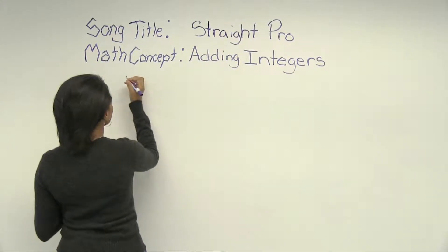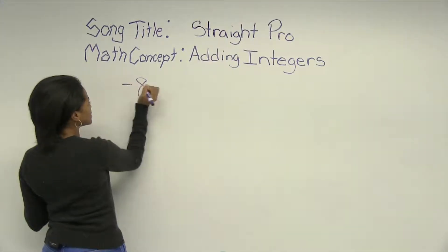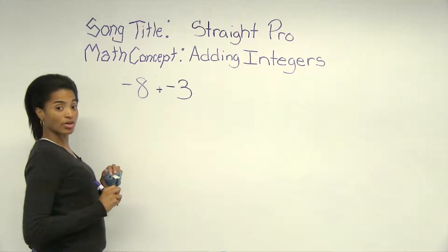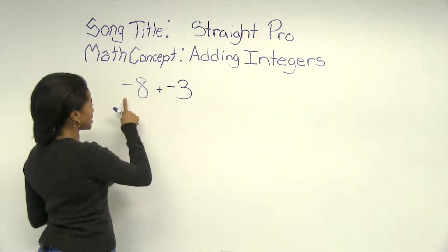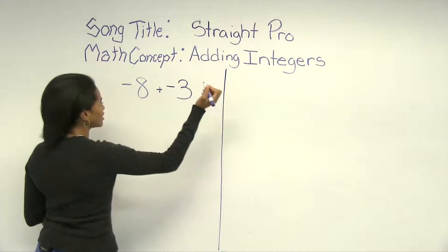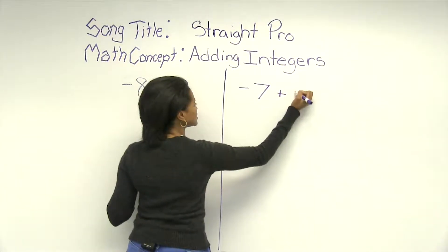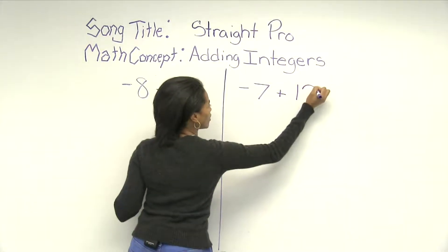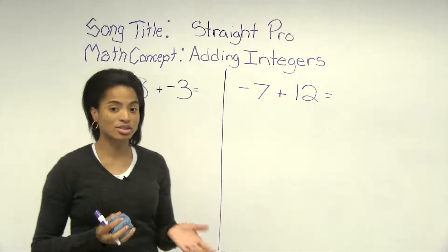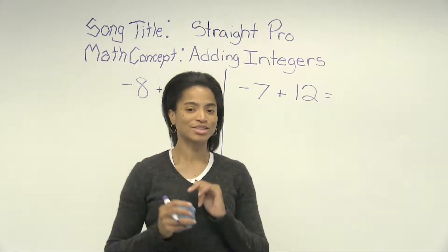I'm going to give you an example first on the board where the signs are the same. Both of these integers are negative. And then let's look at a different one where the signs are different. And so let's take a listen to the track. DJ, play track.